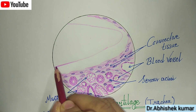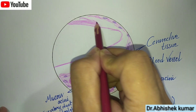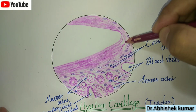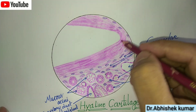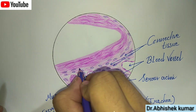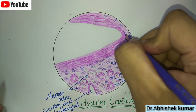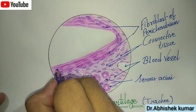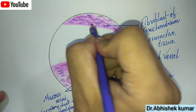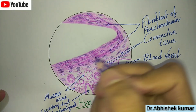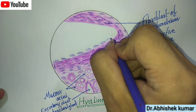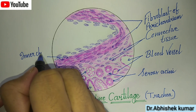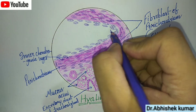Here we have the connective tissue, and here is the fibroblast of the perichondrium. This is the perichondrium, and here is the inner chondrogenic layer.